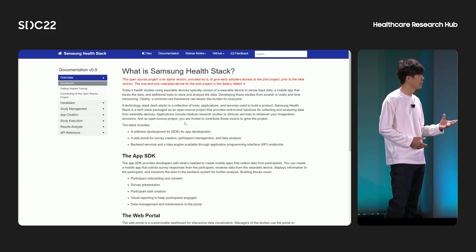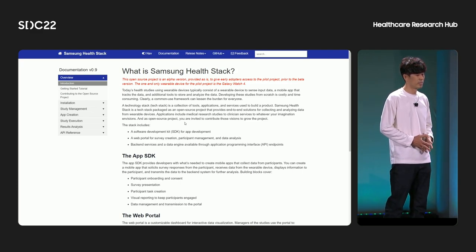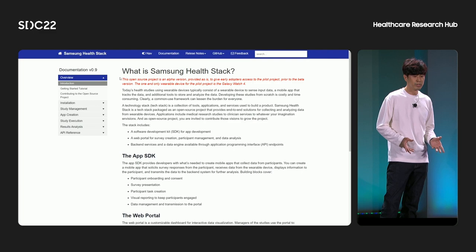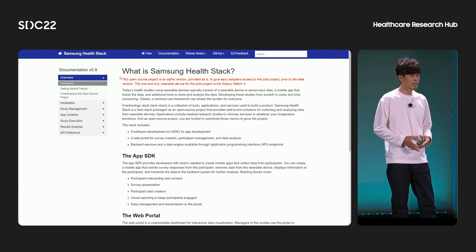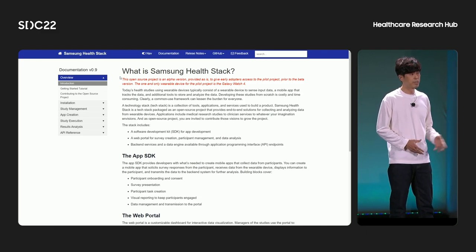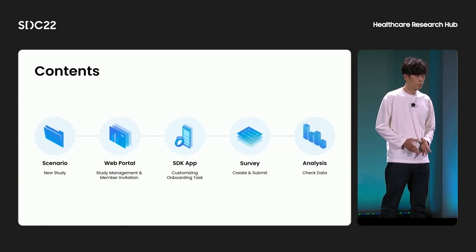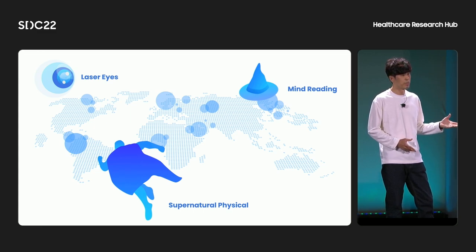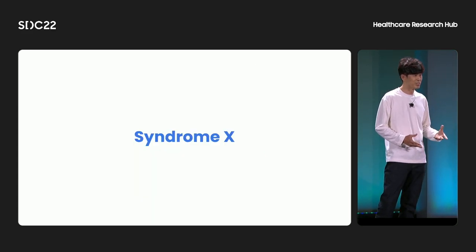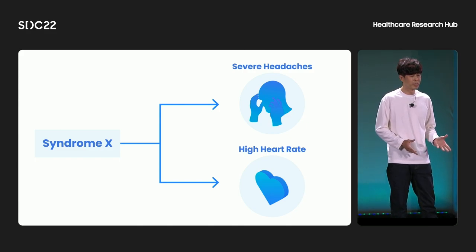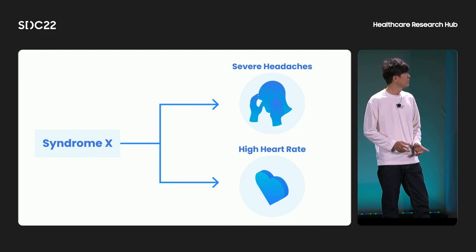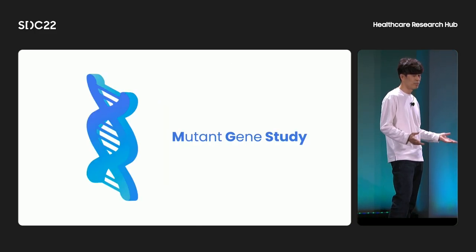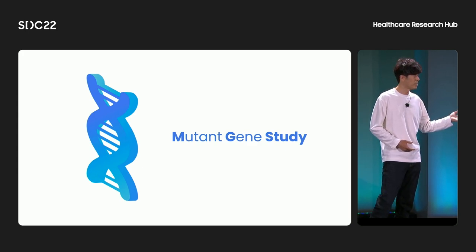Before our demo, I will note that this code lab is available on our GitHub page. Please note the red-colored sentence at the top — we are still in development, so it's still in alpha. Our steps might not be stable. For this demo, let me set up a scenario. Recently, people with superpowers begin to appear all over the world. This phenomenon is called Syndrome X. Dr. McCoy hypothesized this syndrome is related to certain vital signs and symptoms such as heart rate, blood pressure, or headache.